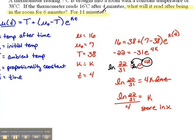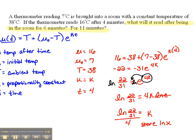It was brought into a room with a constant temperature of 38 degrees Celsius. So we used the information about it being 16 degrees Celsius after 4 minutes to help us solve for our proportionality constant. Now we need to do the real question. What will it read after being in the room for 6 minutes and then for 11 minutes?